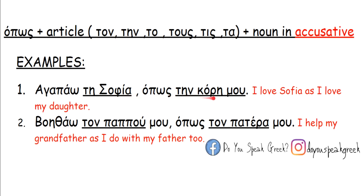For example: Αγαπάω τη Σοφία όπως την κόρη μου. Here the accusative is used because Σοφία is the object of αγαπάω, and in the clause after όπως the verb αγαπάω is implied, so κόρη is also the object — that's why it's accusative. Another example: Βοηθάω τον παππού μου όπως τον πατέρα μου — both τον παππού and τον πατέρα are objects of βοηθάω.